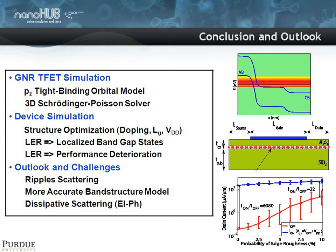In summary, we've done a graphene nano ribbon tunnel FET transistor simulation using a simple PZ-type tight-binding orbital model with a 3D Poisson-Schrödinger solver. We applied a line edge roughness model and found localized band gap states that really deteriorate device performance. What we are now working on is creating a more accurate band structure model and including dissipative scattering — electron-phonon scattering — to model these devices better.